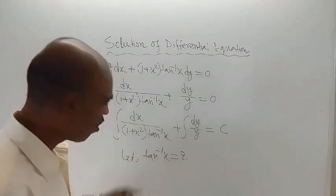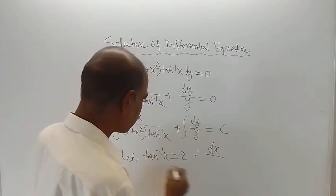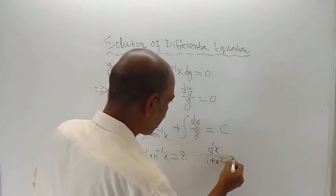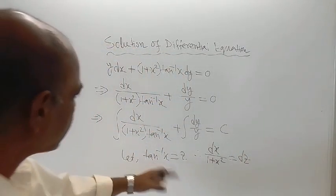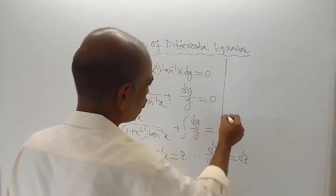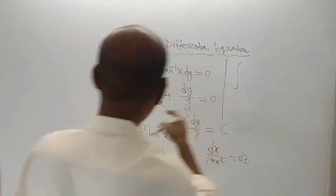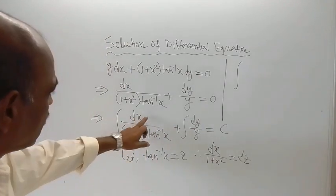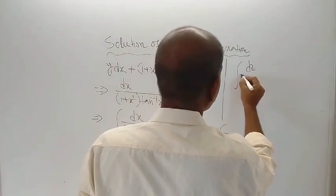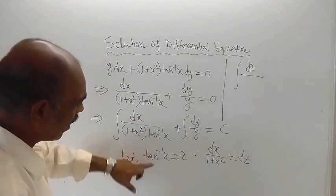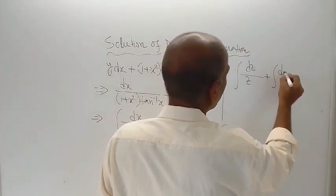Now differentiate both sides of the substitution. On differentiation, the left hand side gives dx by (1 plus x squared), and the right hand side gives dz. So dx by (1 plus x squared) equals dz. Substituting back: dz divided by tan inverse x — and tan inverse x is z — so we get dz by z. And here, dy by y.